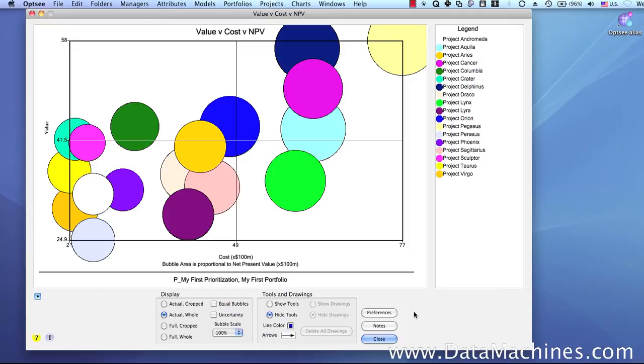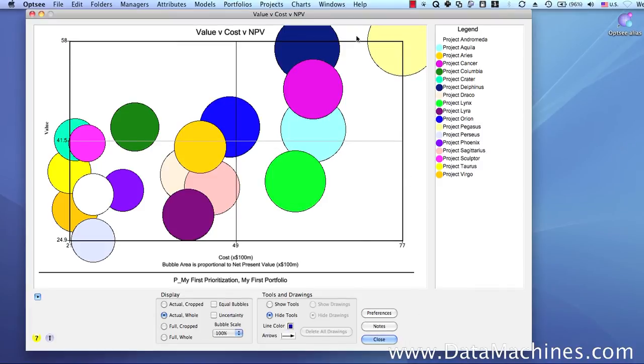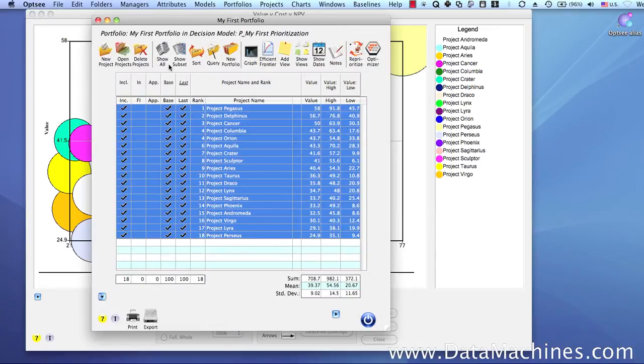And you can also do this with portfolio views, which are saved selected subsets as we demonstrated in another video. Let's go back to the portfolio and we're going to modify a group of projects so that we can see the difference in the bubble chart form.